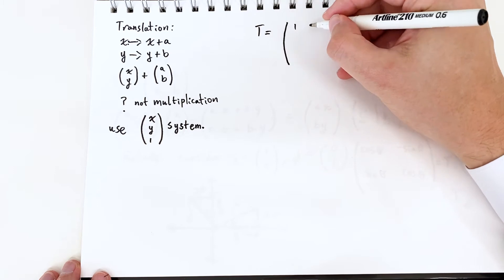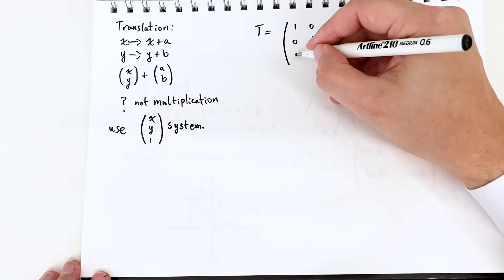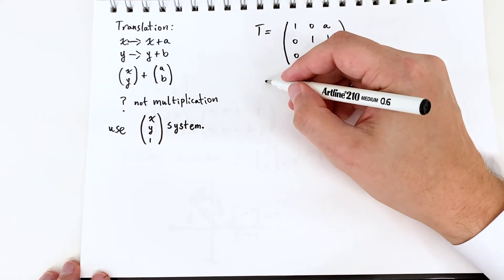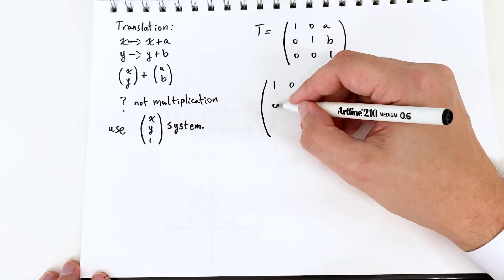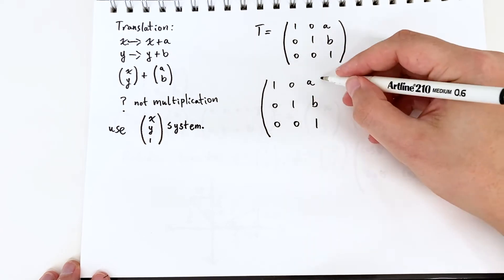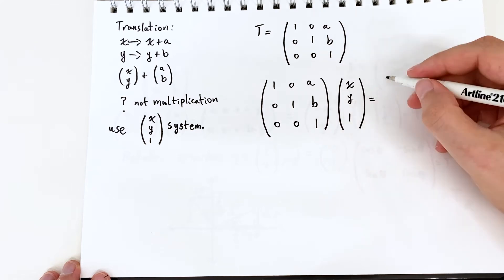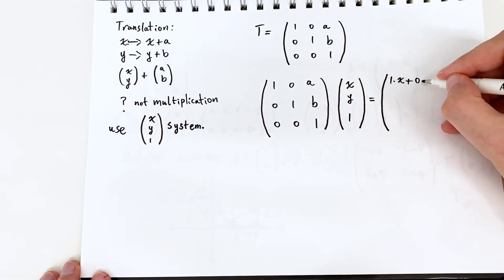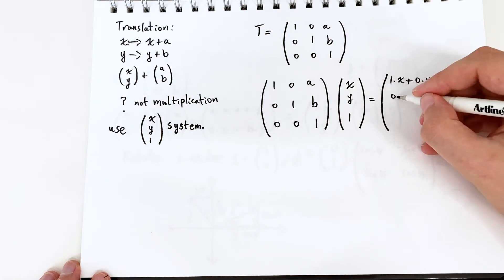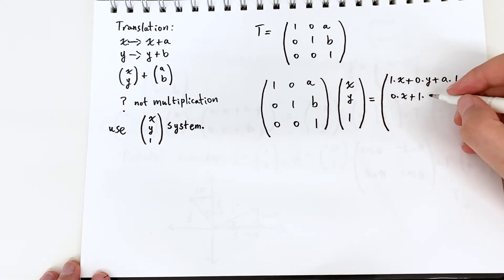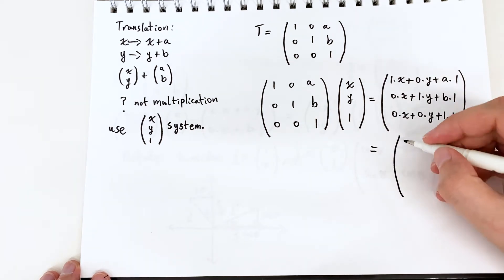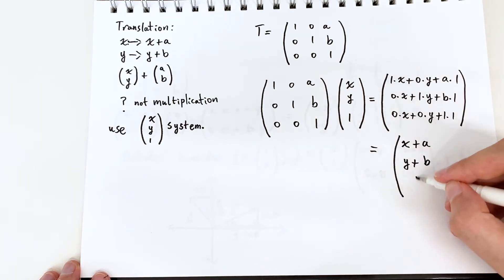Now if we write out this transformation for a translation and we do the matrix multiplication we can see that yes this has done the right thing. It sent us to x plus a, y plus b and we're keeping that one in the end in case we want to do any transformations any translations later on. So that's good we've got a translation which doesn't use addition, it uses matrix multiplication just like everything else.